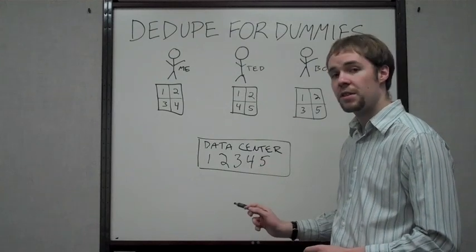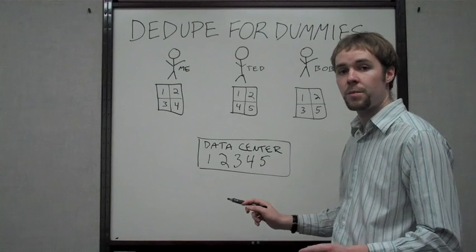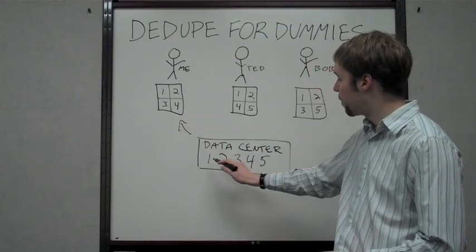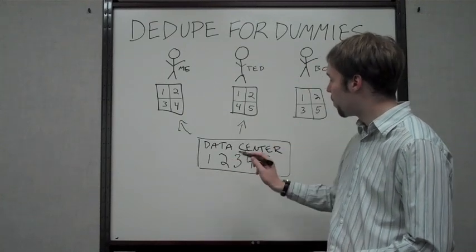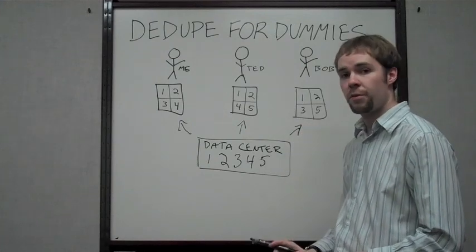The great thing about this is the software can figure out exactly what order the puzzle piece is going to when you need to restore. If I need to restore, it could figure out that I need blocks 1, 2, 3, and 4. If Ted needs to restore: 1, 2, 4, and 5. And if Bob needs to restore: 1, 2, 3, and 5.